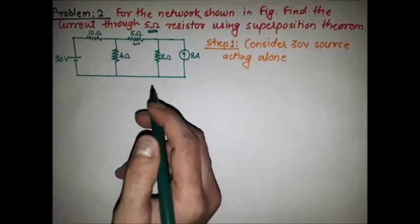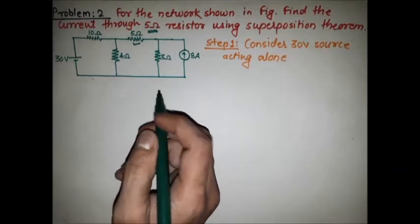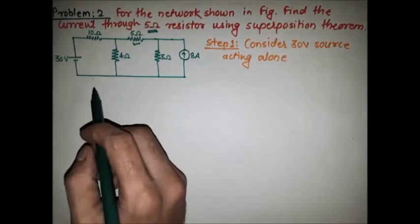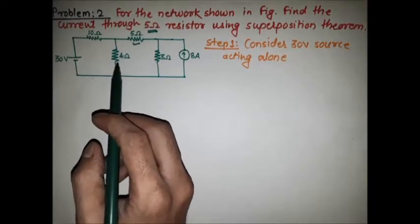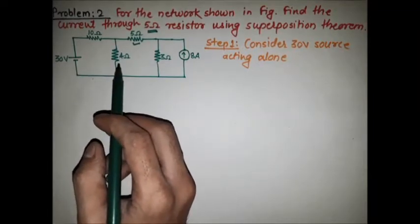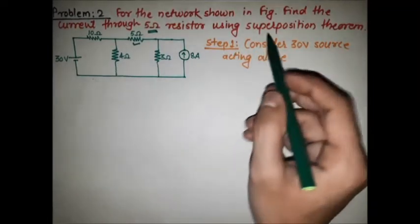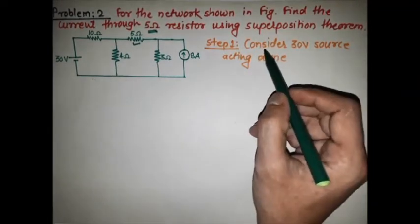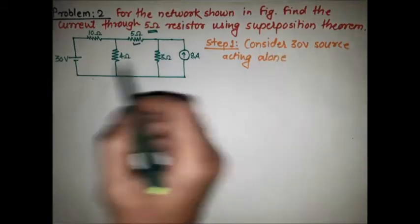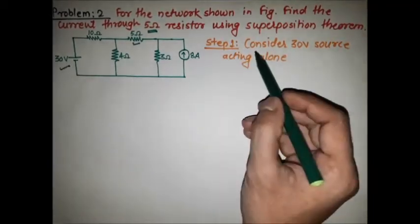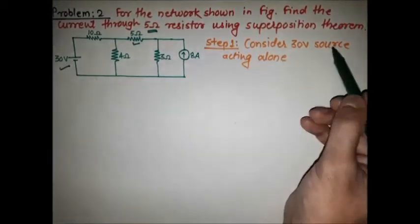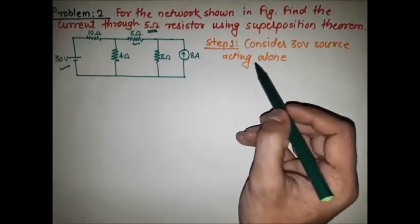According to the superposition theorem, we have to consider the different sources individually and find the current through the given branch. In the first case, we are considering the 30V source acting alone.